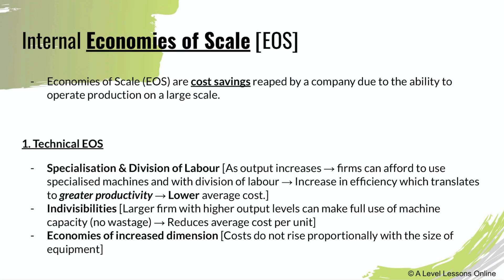Economies of scale are cost savings reaped by a company due to the ability to produce on a very large scale. For example, Apple can produce on a massive scale, which allows them to reap significant cost savings — such as buying items in bulk and having specialized labor in certain areas. These are what we call internal economies of scale.